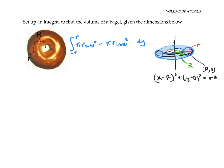To find r_outer, that's the distance from the origin all the way out to here. So when I'm right along the x-axis, it would be big R plus little r.